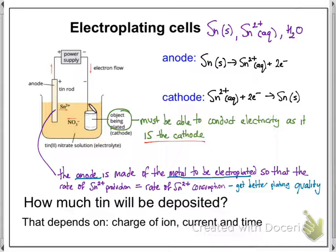It's also worth noting that the anode must be made out of the metal to be electroplated. So if you want to plate something with tin, you need a tin anode. Why? Because you don't want the concentration of tin 2+ ions to change — you get a better plating quality if it doesn't. So if you have a tin anode, the rate of production of tin 2+ ions at the anode will equal the rate of tin 2+ ions being consumed at the cathode.